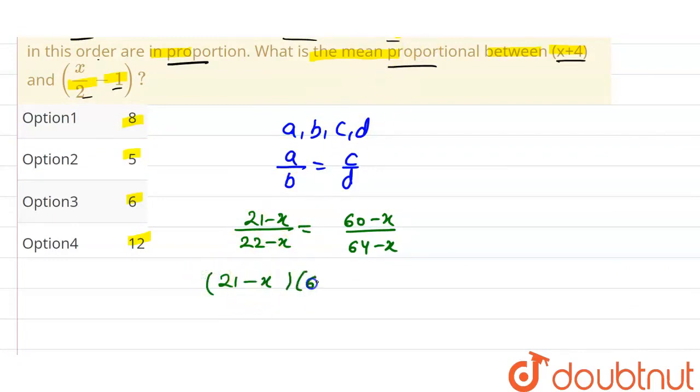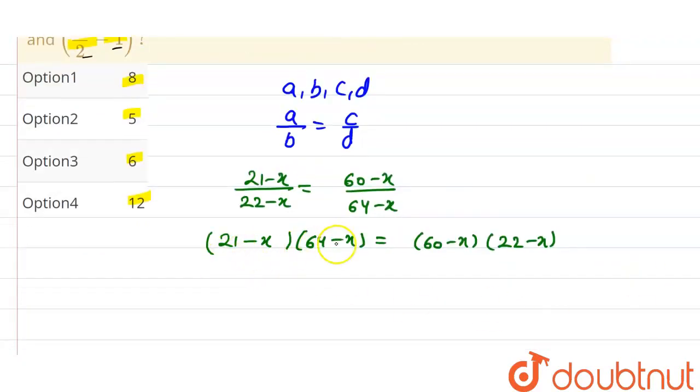Now solving this, 21 times 64 minus 21x minus 64x plus x squared equals 60 times 22 minus 60x minus 22x plus x squared.